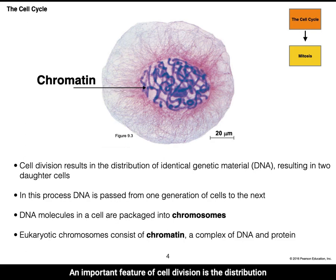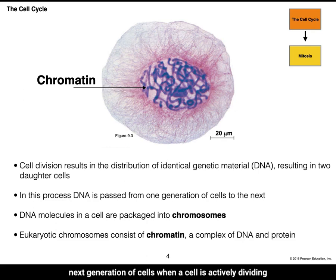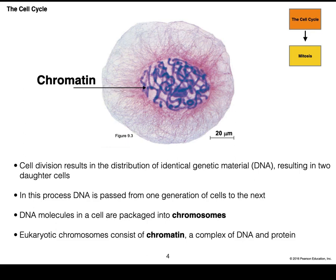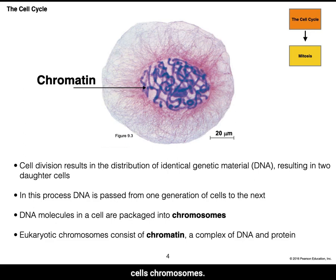An important feature of cell division is the distribution of identical genetic material — DNA — resulting in two identical daughter cells. This allows genetic information to be passed from one generation of cells to the next. When a cell is actively dividing, the DNA can be found in packaged structures called chromosomes. DNA that is not actively dividing is called chromatin, a complex of linear DNA and protein. Once ready to divide, the chromatin condenses into chromosomes. The micrograph here shows a eukaryotic cell's chromosomes in purple, with thinner surrounding threads representing the cytoskeleton.